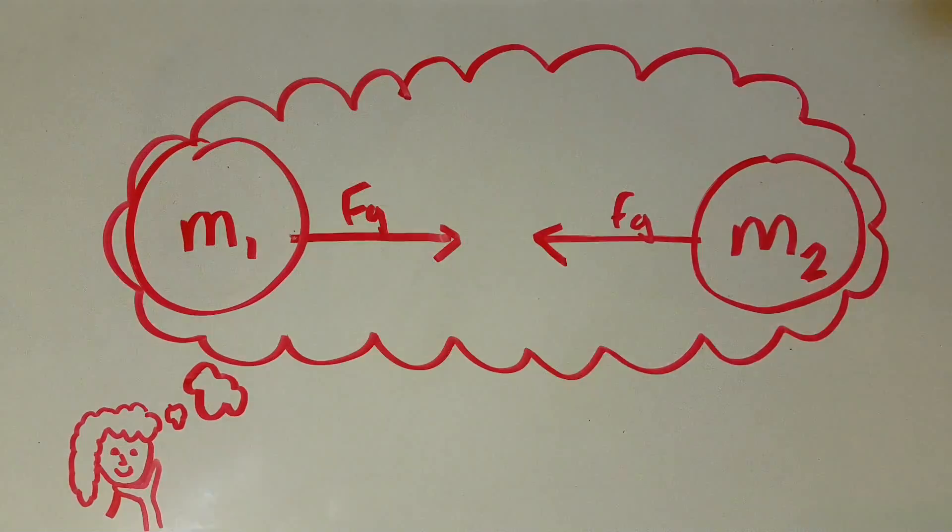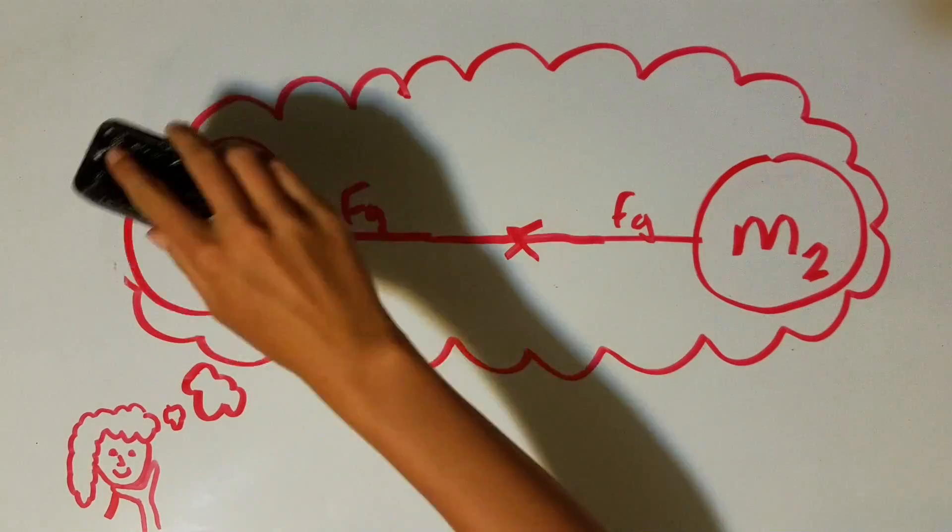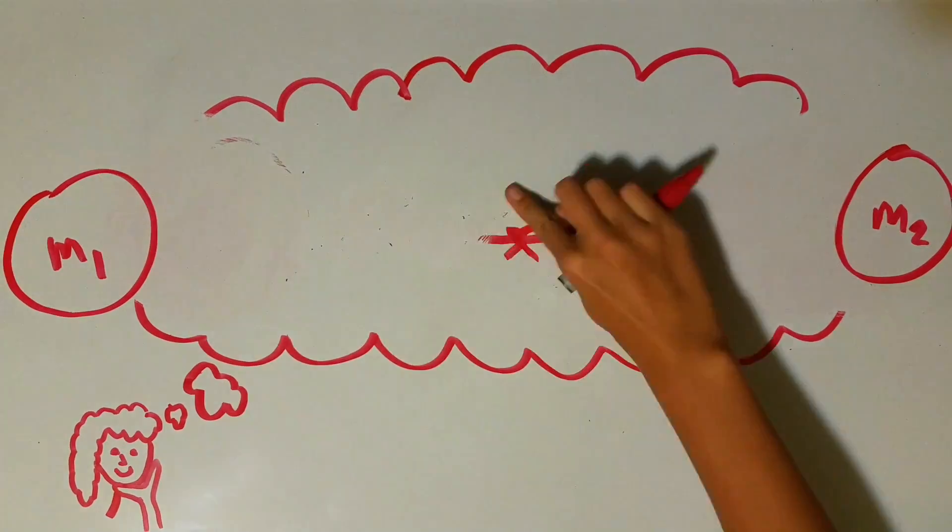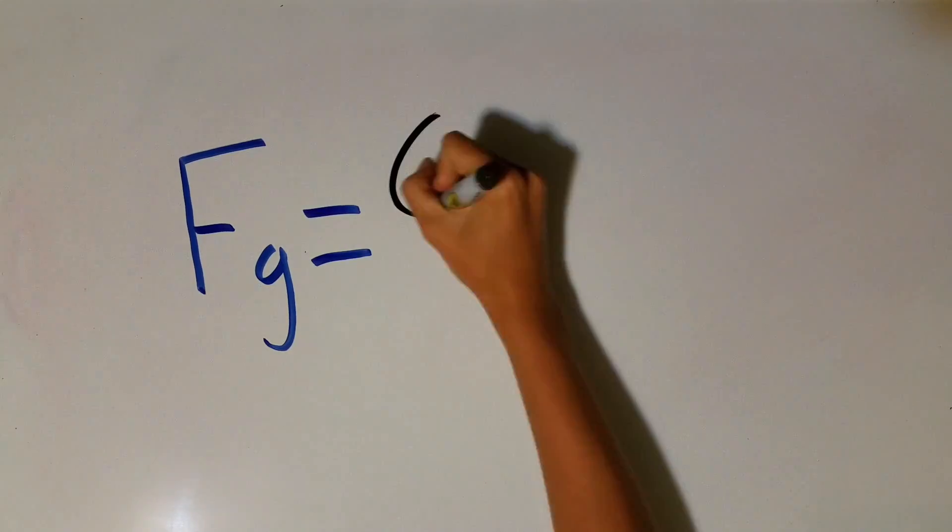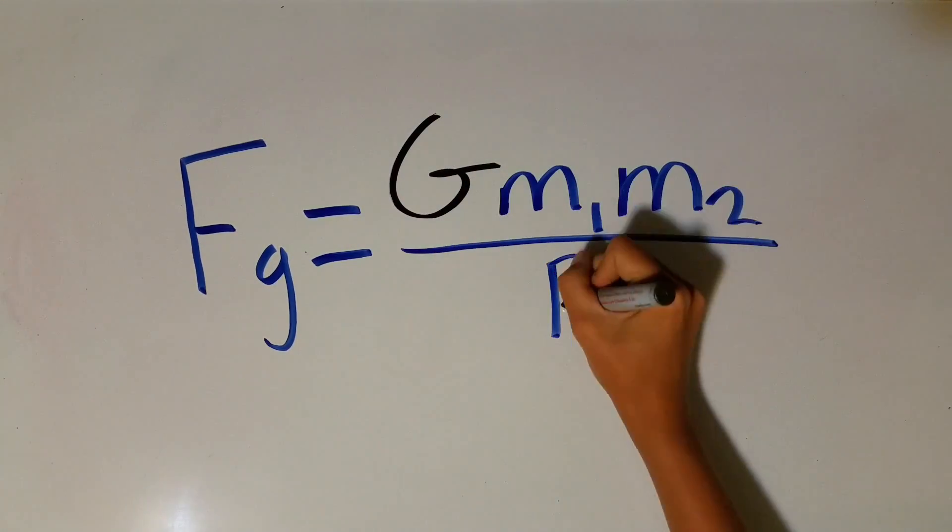That is, the larger the masses, the larger the gravitational force, and the larger the radius, the smaller the gravitational force. He developed the universal gravitation equation F equals G M1 M2 divided by R squared in 1687.